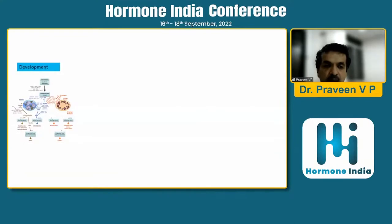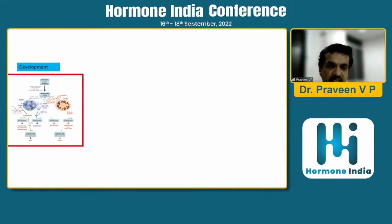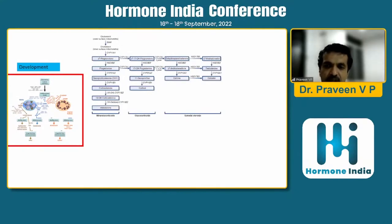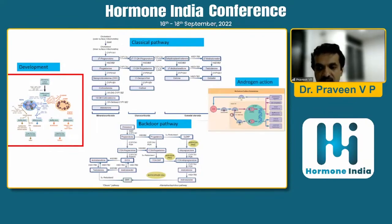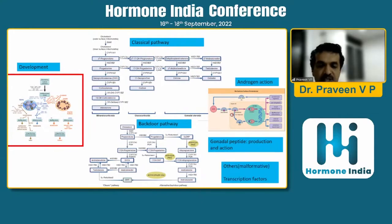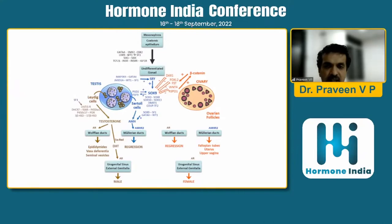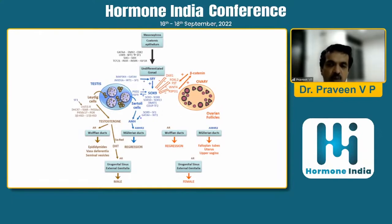Let's move closer for a better view of what goes wrong. There may be problems with development, problems with the classical pathway of testosterone synthesis, androgen action, gonadal peptide problems, and malformative defects. On the developmental side — which Dr. Lagesh has already discussed — we know the importance of SRY, SOX9, other SOX genes, RSPO1, WNT4, WT1, etc.